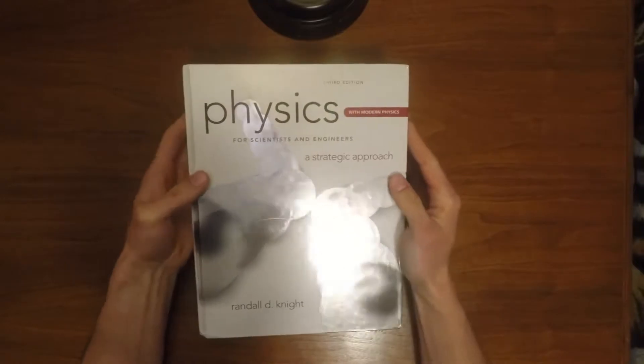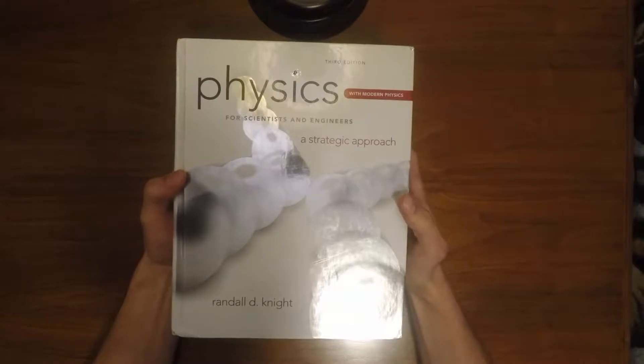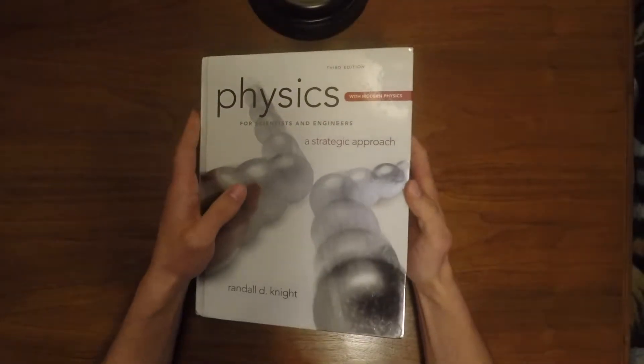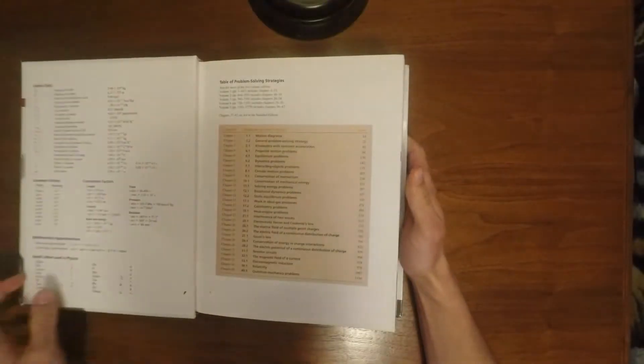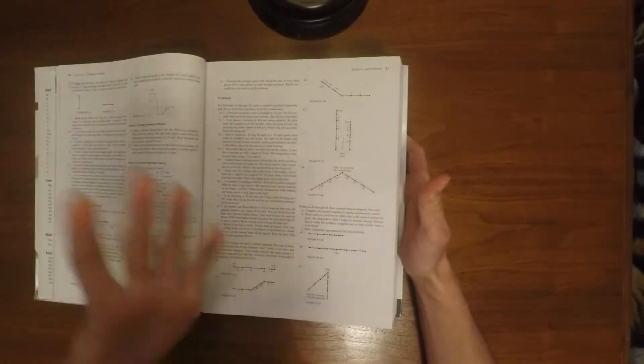The book that I will be using is Physics for Scientists and Engineers by Randall D. Knight. I think this is a marvelous book and in fact, I do think that this is probably the best book you can possibly acquire to study physics.